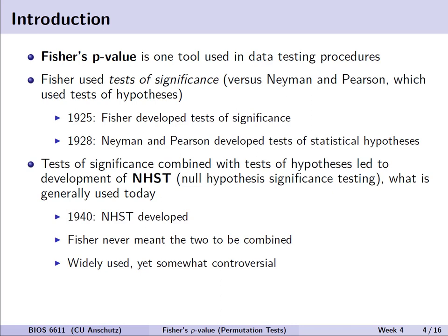Interestingly, we don't really call either of those out on their own nowadays because these tests of significance were combined with the tests of hypotheses to what we now know as null hypothesis significance testing, or NHST. This was developed in 1940 and was a mashing together of these two concepts which Fisher, Neyman, or Pearson never meant to be combined. However, we widely use this today and it still has a little bit of controversy based on its interpretations and how you most commonly may miss some of the nuance.